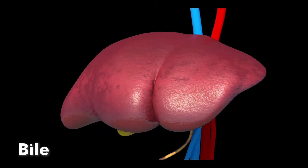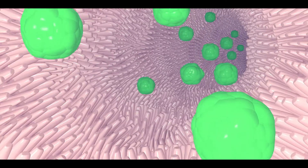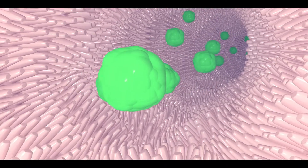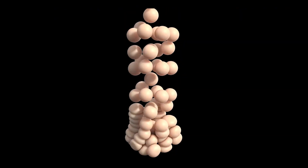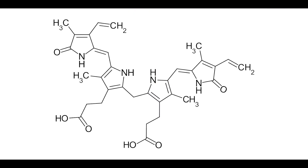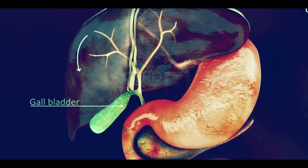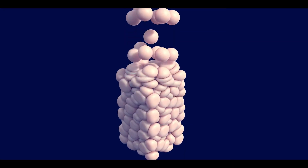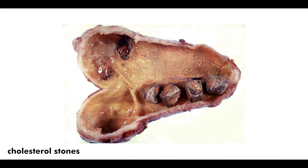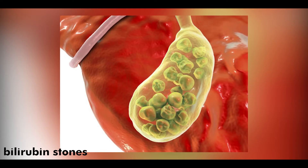Bile is a thick fluid that comes from our liver and is stored in the gallbladder, from which bile releases into the small intestine through the bile duct. Bile is responsible for degradation of fats in our food. Bile mainly contains cholesterol and bilirubin, which both form gallstones in the gallbladder. When bile is stored in the gallbladder, cholesterol in the bile starts accumulating and forms cholesterol stones, while bilirubin also accumulates and forms bilirubin stones.